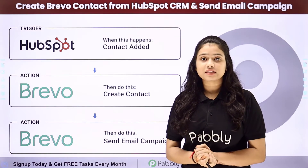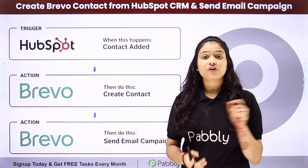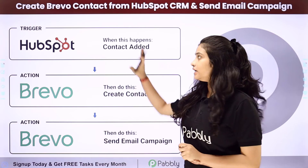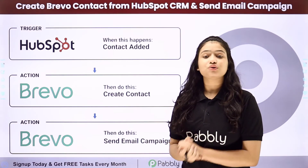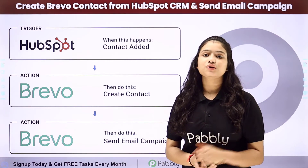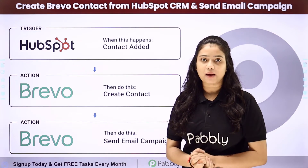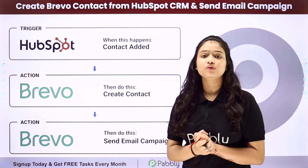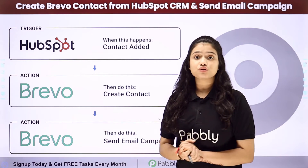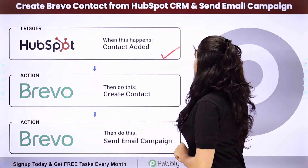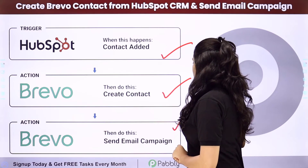So how are we going to automate this process without any effort? For that, we will have to integrate both these applications. To do the same, we are going to use an automation and integration software, Pabbly Connect, in order to connect all of them. We have HubSpot CRM in our trigger and Brevo in our action.